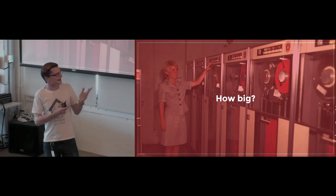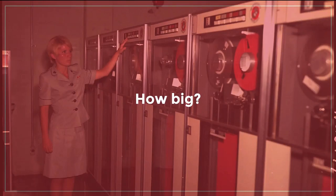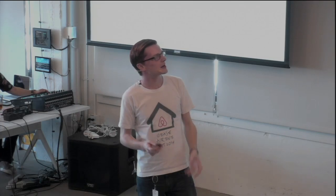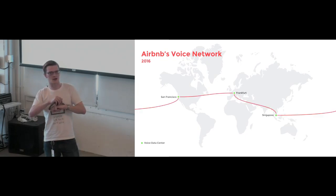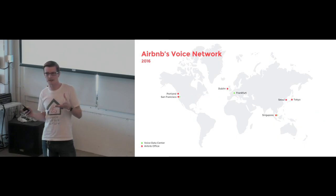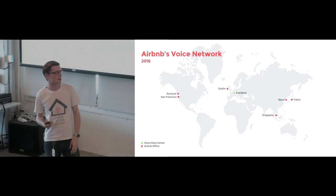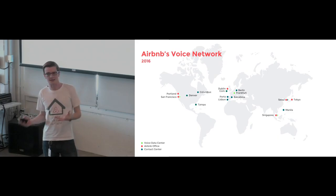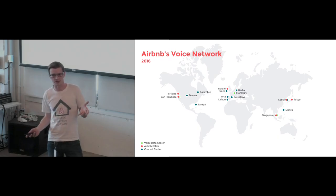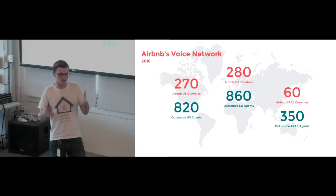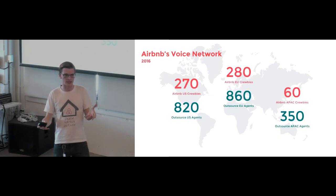So how big? I love this photo — it's from the 60s, these tape drives are three megabytes each. Airbnb's voice network is located out of three data centers in San Francisco, Frankfurt, and Singapore. This is linked by our Global Backbone, an MPLS dedicated network. We connect to six offices around the world, but more importantly, we connect to ten different call center partners. Seventy-five percent of our CX workforce works at call centers, and this infrastructure supports primarily those agents. There are over 2,000 agents who work for us at contact centers.